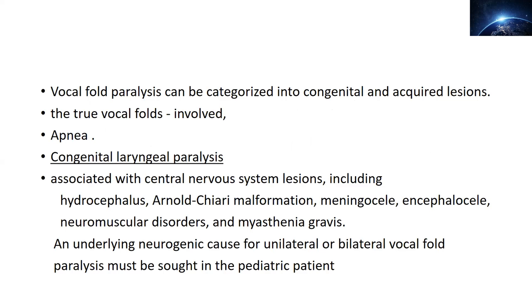Starting with vocal cord paralysis, we can categorize it into different categories like congenital and acquired. Usually the true vocal cords are involved in vocal cord paralysis, and it can either be bilateral or unilateral — meaning only one vocal cord is involved, or both are paralyzed.